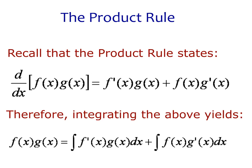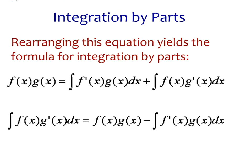Let's recall the product rule from calculus. The product rule states that the derivative of a product f(x) times g(x) is f'(x)g(x) plus f(x)g'(x). If we take that equation and integrate both sides, we get back on the left hand side f(x) times g(x), and on the right hand side we can represent that as the sum of two integrals. In integration by parts we solve for one of those integrals in terms of the other to help us get the final answer.